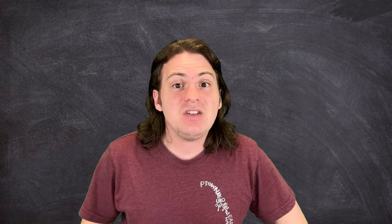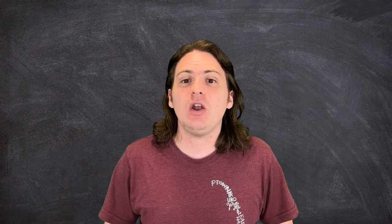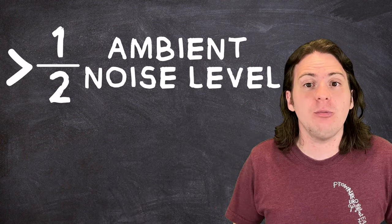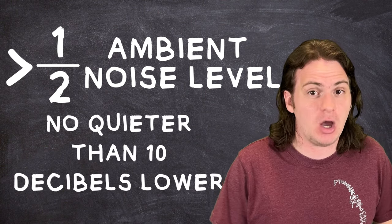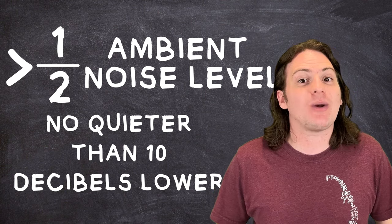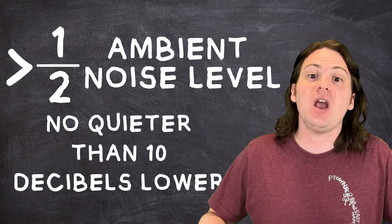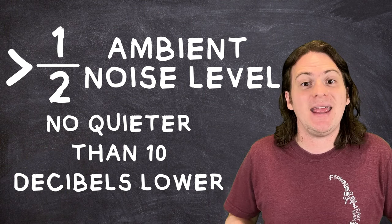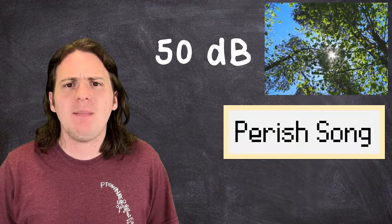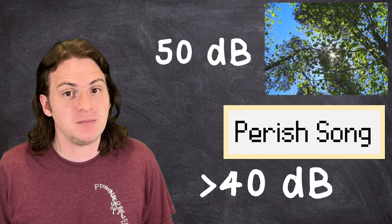So in reality, it's generally agreed that a sound can only truly be heard if it is more than half the volume of the ambient noise around it, or no less than 10 decibels lower. Any quieter, and your ears cannot distinguish it from the other sounds around you, and therefore, you cannot hear it. In general, nature has an ambient noise level of around 50 decibels, meaning that for a sound to be distinguishable, it must be at least 40 decibels in volume.